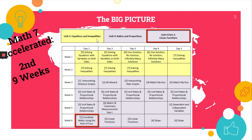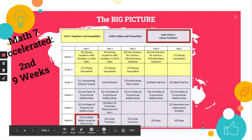This is a Math 7 Accelerated lesson, taught during the second nine weeks. Here's Unit 4, Part 2. This Unit 4, Part 2 is only taught for Math 7 Accelerated. Goodyear Walks, using the Rule of 4, is the second lesson and it's one day.